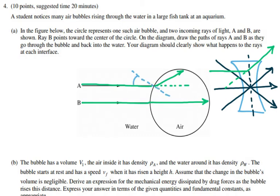the incident ray angle is going to be smaller than the refracted ray angle because the index of refraction for air is less than the index of refraction for water. By the time the ray reaches the end of the bubble, the incident angle will be greater than the refracted angle when the ray is coming out of the air into the water, creating a refracted angle that is smaller than the one inside the air.